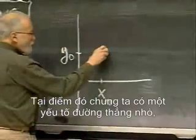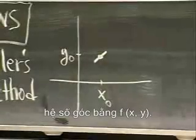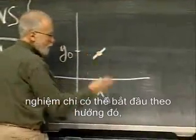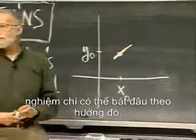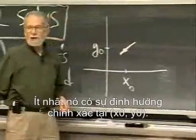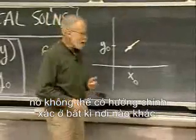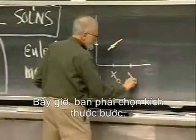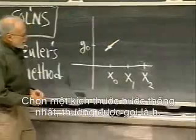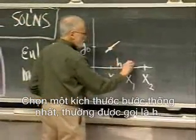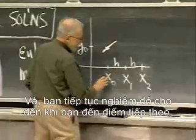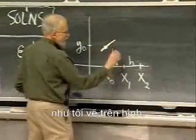What information do we have at that point? All we have is the little line element whose slope is given by f(x, y). If I start the solution, the only way it could possibly go would be to start off in that direction, since I have no other information. At least it has the correct direction at x₀, y₀, but it's not likely to have the correct direction anywhere else. What you do then is choose a step size — I'll draw just two steps of the method. You choose a uniform step size, usually called h.